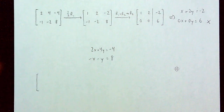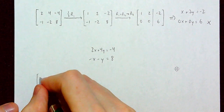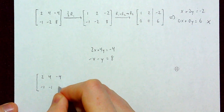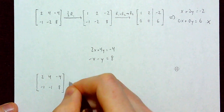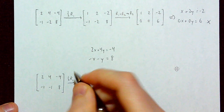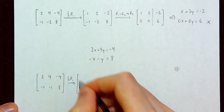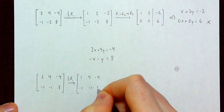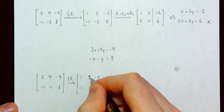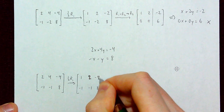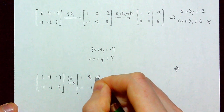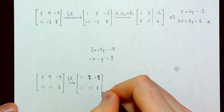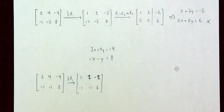The first couple of steps are the same as before. Augmented matrix: 2, 4, negative 4; negative 1, negative 1, 8. I take the first row and halve it to get 1, 2, negative 2, while the second row stays as negative 1, negative 1, 8.